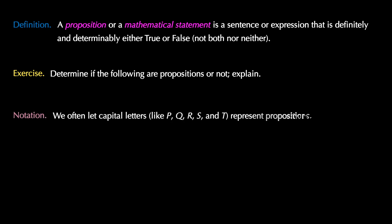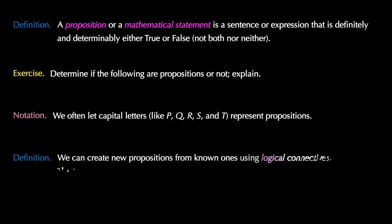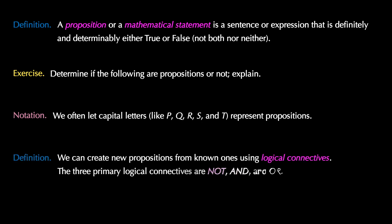For notation, we usually let capital letters like P, Q, R, S, and T represent propositions. We can create new propositions from known ones using logical connectives. The three primary logical connectives that we will look at are NOT, AND, and OR.